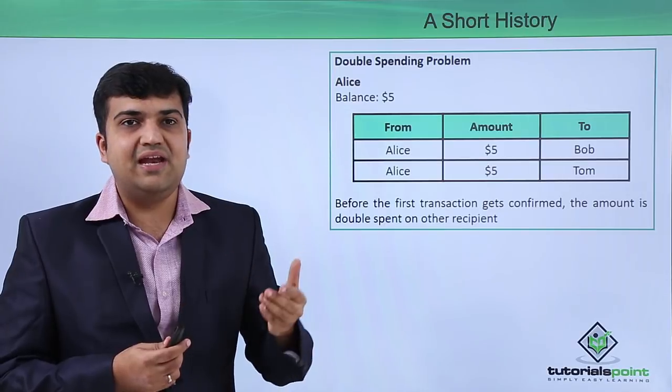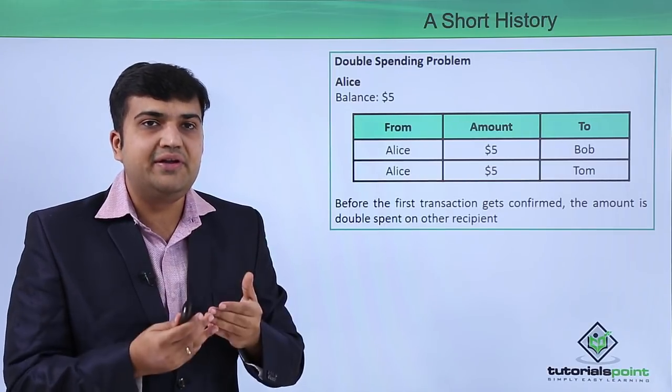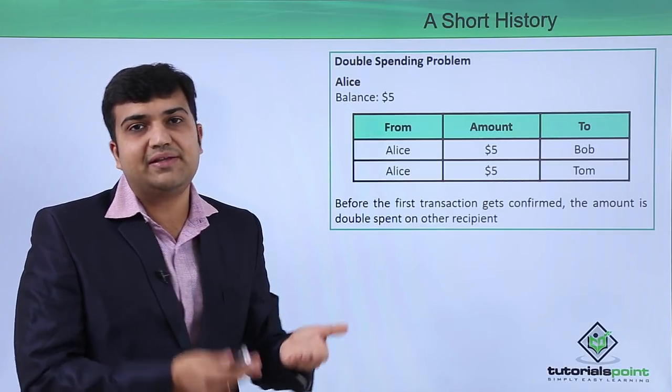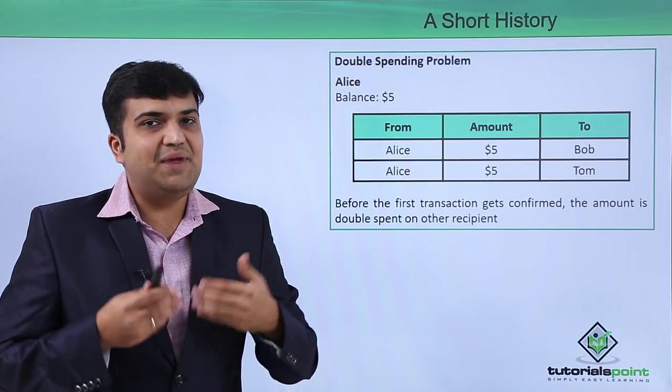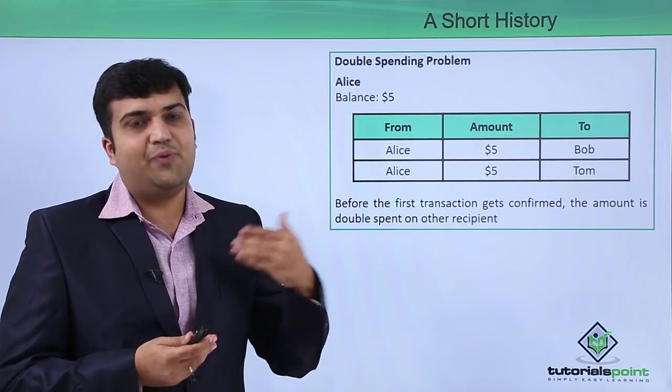In such a case, we won't be sure of the order in which the ledgers are received at the other end. It may happen that $5 are being spent twice.